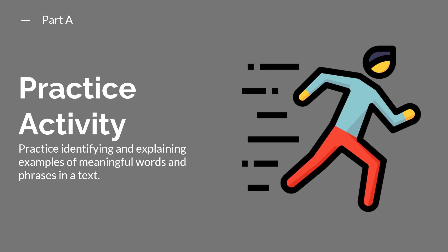Let's go ahead and pause this video to complete the first part of the practice activity. In Part A, you're going to be practicing identifying and explaining examples of meaningful words and phrases in the John Muir text. When you're done with the activity, go ahead and unpause the video to continue the lesson.